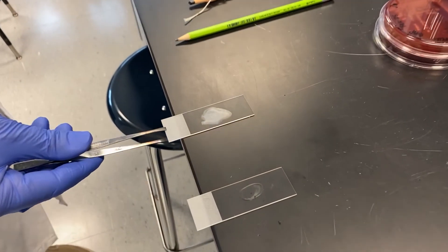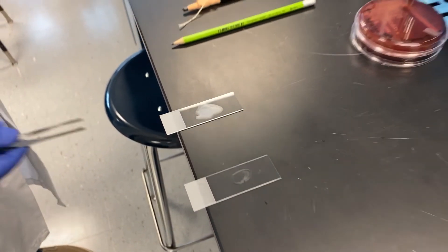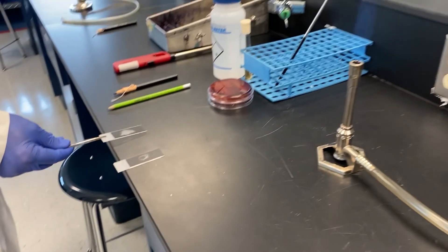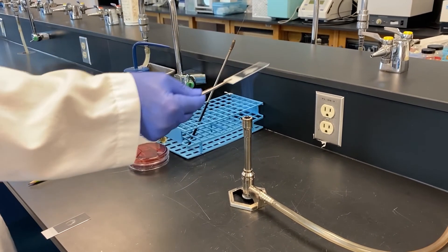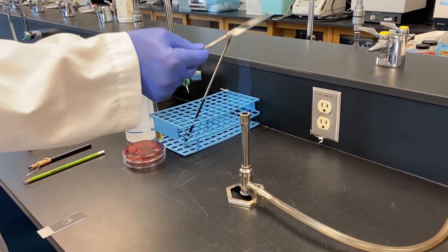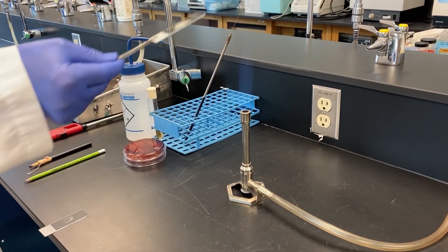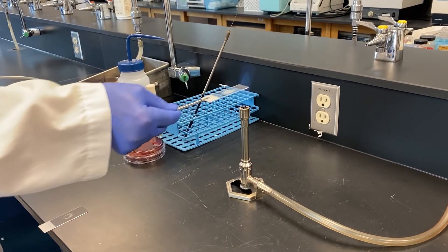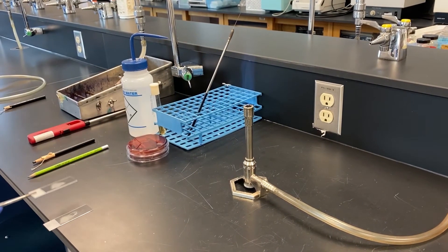We have our two smears now, one from the broth culture and one from the plate culture. We've allowed them to dry and they need to be heat fixed. Heat fixing serves to kill any viable bacteria on the slide as well as make them stick to the slide so they don't wash off during any staining procedures.